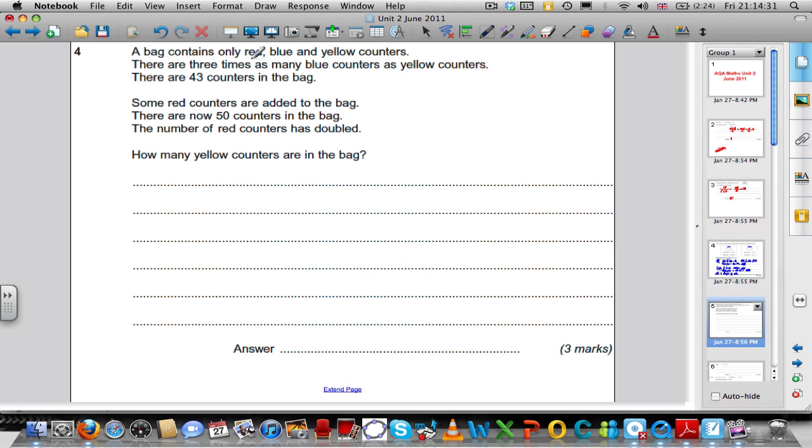There's a bag with red, blue and yellow counters. Red plus blue plus yellow. There are three times as many blue counters as yellow counters. There are 43 counters in the bag. Some red counters are added to the bag. There are now 50 counters in the bag.